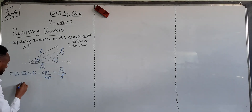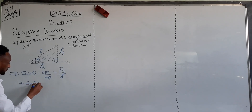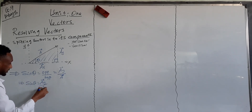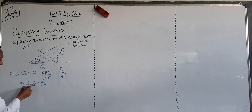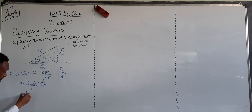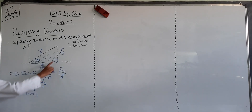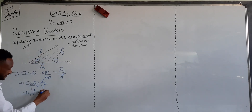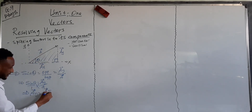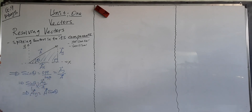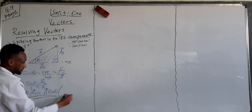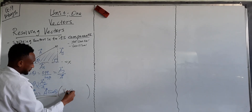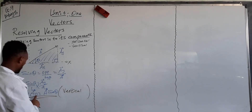This implies that sin theta is equal to the vertical component Ay over vector A. If we cross-multiply, we get that Ay, the vertical component of this vector A, is given as vector A times sine of theta, at the angle at which vector A is projected. This is the vertical component of vector A.